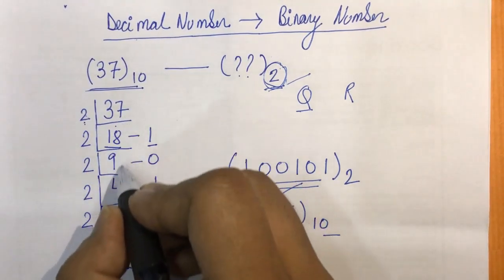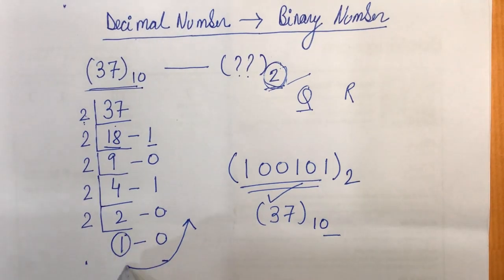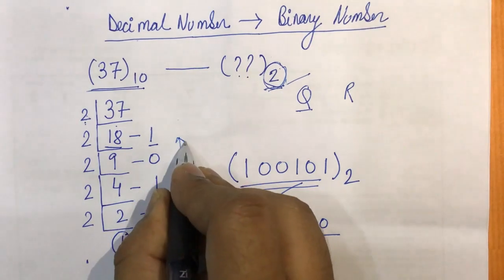We'll keep on repeating this process till we get a 1 over here, and then we write it from the end and then we go up till the number.